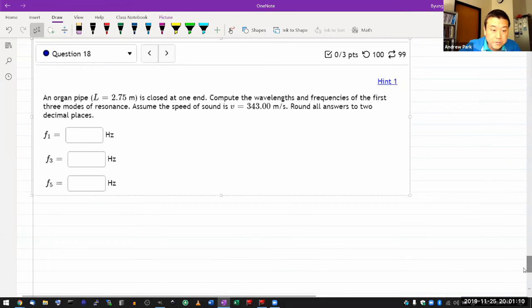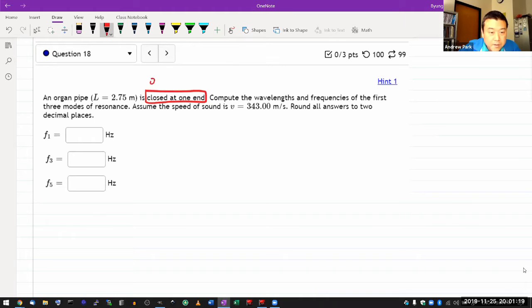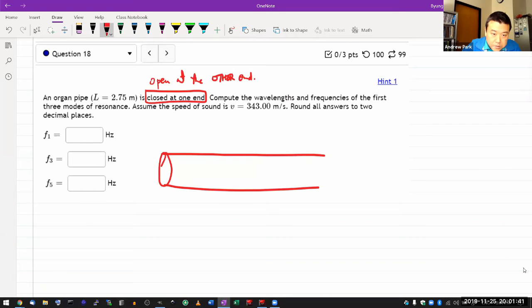Let me just quickly draw that. It says it's closed at one end, and I'm interpreting this to mean open at the other end. So let me throw this pipe sideways so I have a bit of room. Here's my representation of organ pipe. I have a closed end here and an open end here.